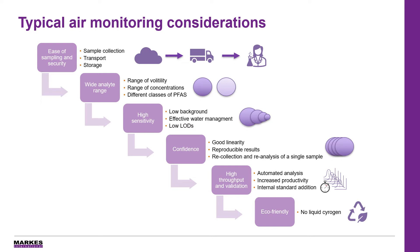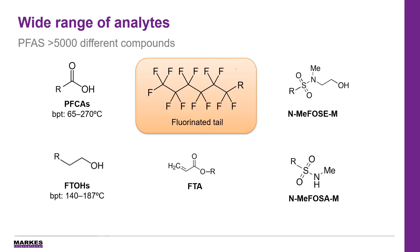Automated, cryogen-free, unattended operation improves productivity, and validation using internal standard addition adds further confidence to the results. It's been estimated that the PFAS family may include approximately 5 to 10,000 chemicals. These synthetic organofluorine chemical compounds have multiple fluorine atoms attached to an alcohol chain or a fluorinated tail. In our study we chose a selection of 18 standard compounds to validate the method, representing a range from various species that are compatible with GC-MS analysis.